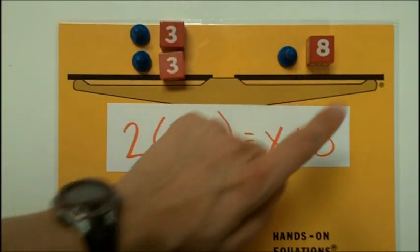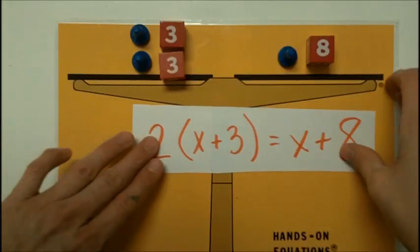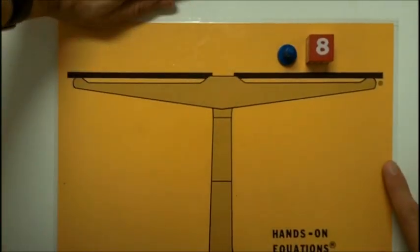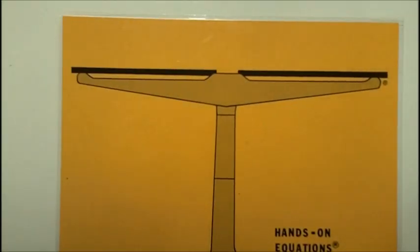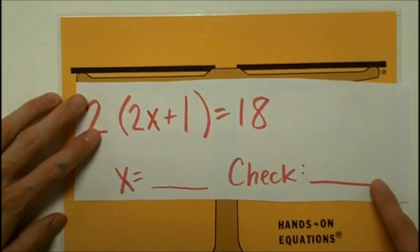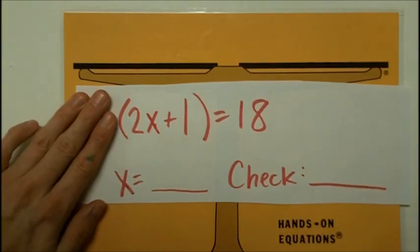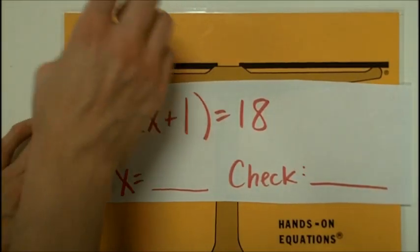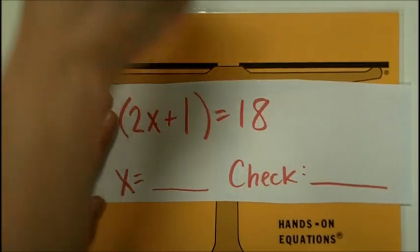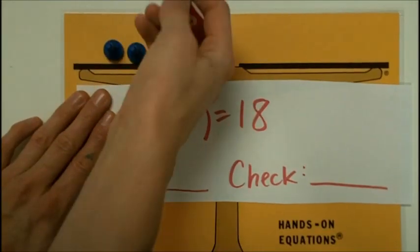Over here, 2 plus 8 equals 10. So this would work. So let's do two practice problems together. So first, I would see that there are parentheses, which means I'm going to double what's in the parentheses. So I'm going to cover up the 2 and set up 2x plus 1.